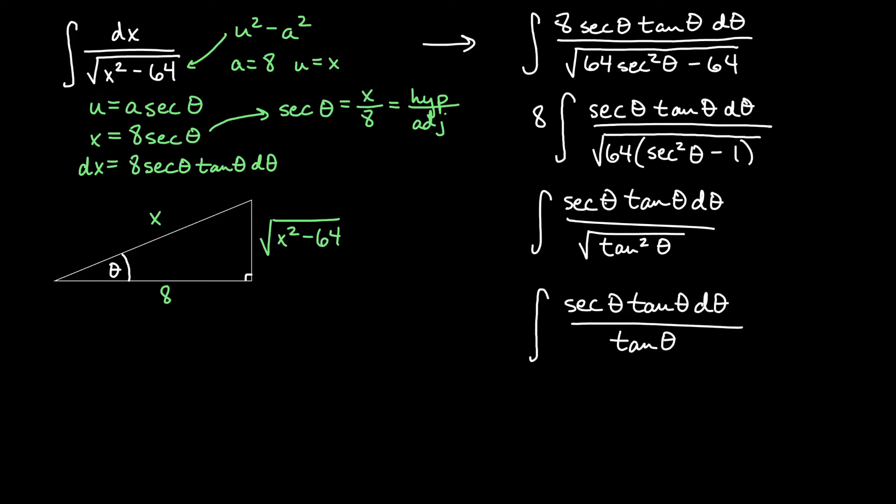We will get the antiderivative of secant theta tan theta d theta over tan theta. And of course, our tangents will then reduce. So we will get simply the antiderivative of secant theta d theta.